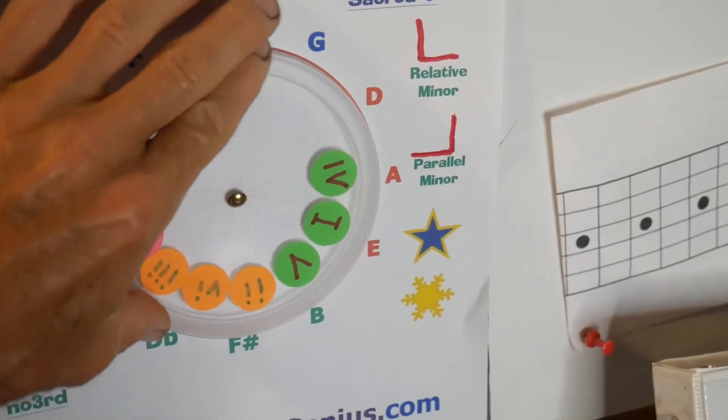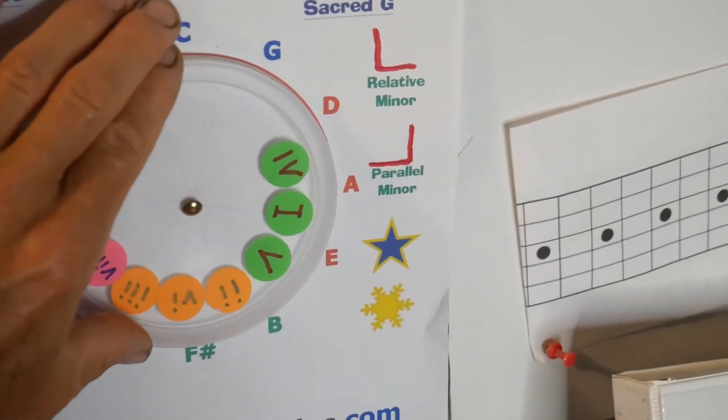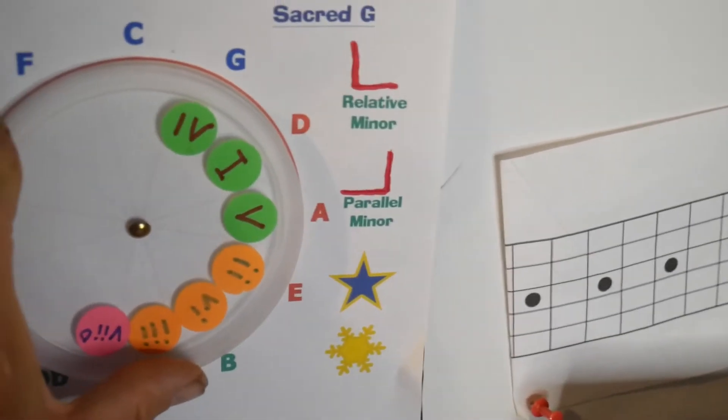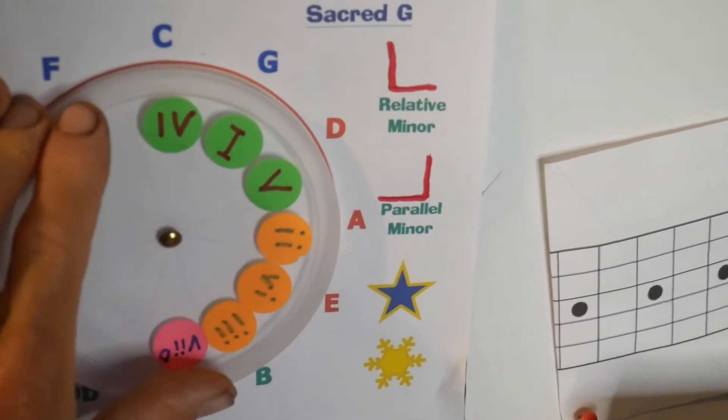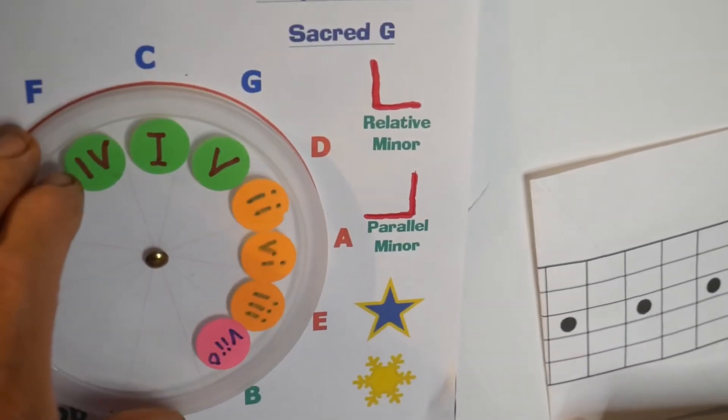You can do this for any power chord that you want. The circle of fifths will give you the answer. You just pick your note, you go one clockwise, and that's your other note.